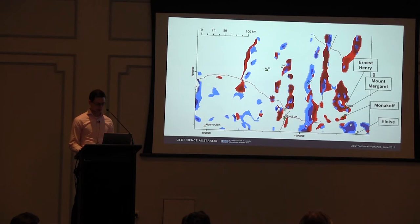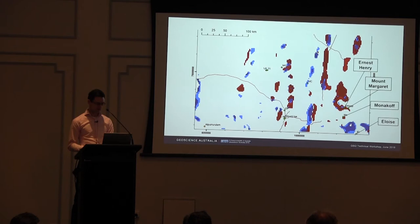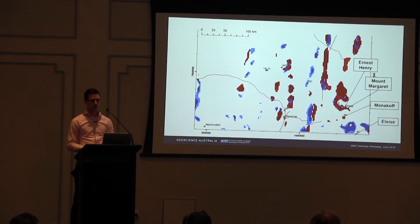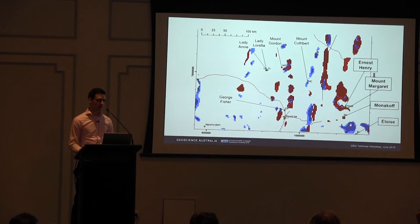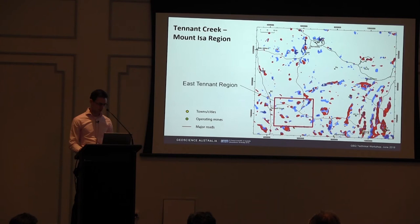We can make those cutoffs more extreme and see if the deposits still have any association with our proxies — and they do. Ernest Henry, Mount Margaret, and Monacoff all still lie within one of these magnetite alteration proxy zones. Even with the extreme cutoff, Ernest Henry still lies directly adjacent to one of those hematite alteration proxies. There are other operating mines in the area that don't have an association with these models, but we wouldn't expect them to — we're not looking for that type of alteration system. Interestingly, Mount Cuthbert does lie within one of those hematite alteration proxies. A very encouraging result for our regional scale, relatively coarse model.